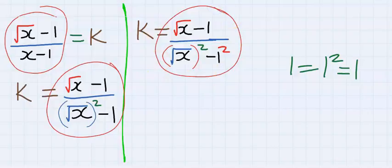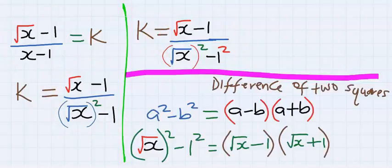Consider difference of two squares: if a squared minus b squared equals (a minus b)(a plus b), hence square root of x squared minus 1 squared is the same as (square root of x minus 1)(square root of x plus 1). Hence I'm going to apply difference of two squares to this denominator.